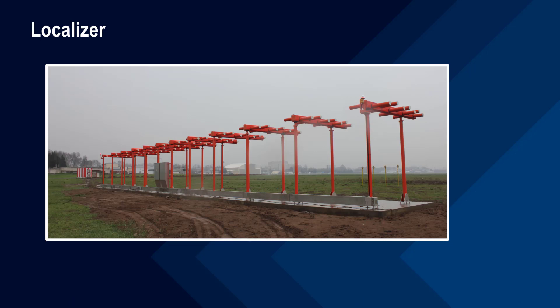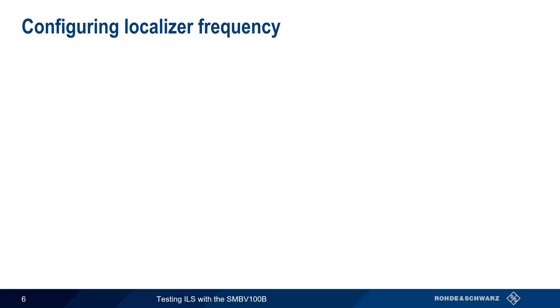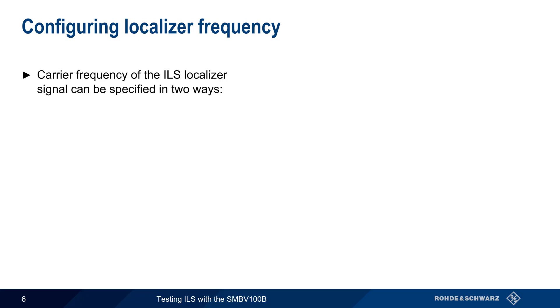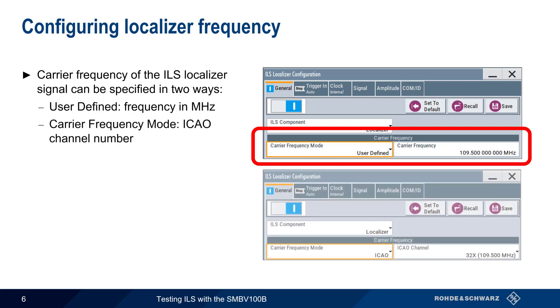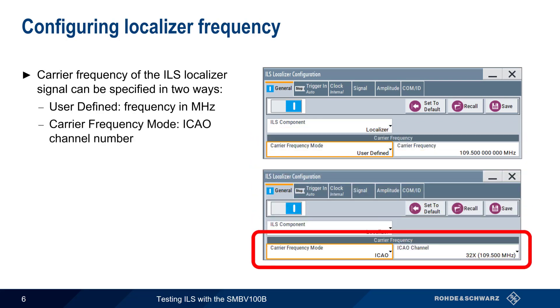Let's start with localizer signal generation. Note that many of the concepts and terms used in localizer signal generation are also used in glide slope signal generation. The first step in configuring a localizer signal is specifying the localizer frequency. This can be done either by directly specifying the frequency in megahertz, or by entering it as an ICAO channel number. Here, 109.5 MHz corresponds to ICAO channel number 32X.